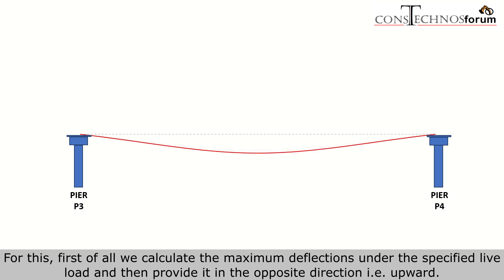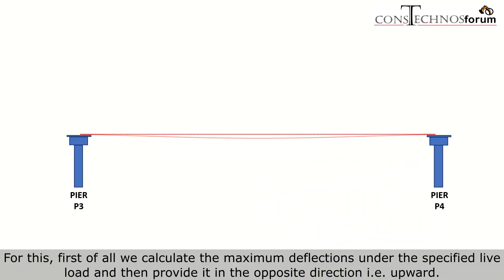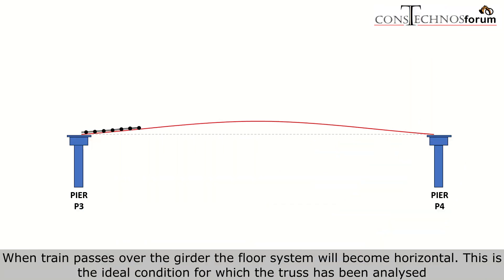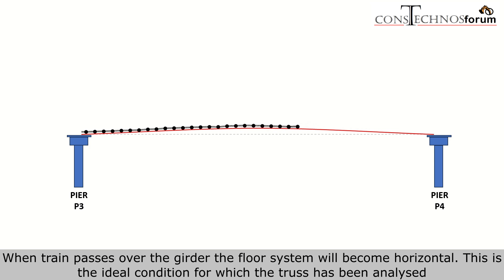We first calculate the maximum deflection under the specified live load and then provide it in the opposite direction, i.e. upward. When the train passes over the girder, the floor system will become horizontal. This is the ideal condition for which the truss has been analyzed.